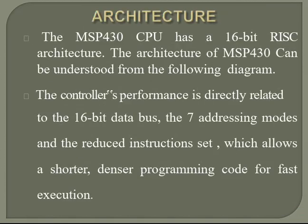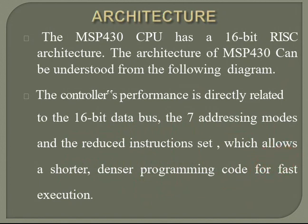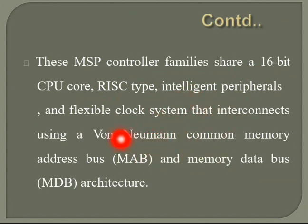The MSP430 CPU is a 16-bit RISC architecture. Controller performance is directly related to its 16-bit data bus. It has seven addressing modes and a reduced instruction set, which helps in shorter, denser programming code for fast execution. The MSP430 control families share the 16-bit CPU core with RISC-type intelligent peripherals and a flexible clock system, interconnected using a common memory address bus (MAB) and memory data bus (MDB) architecture.